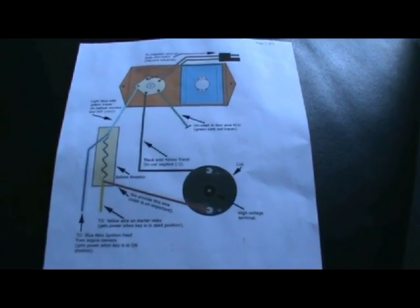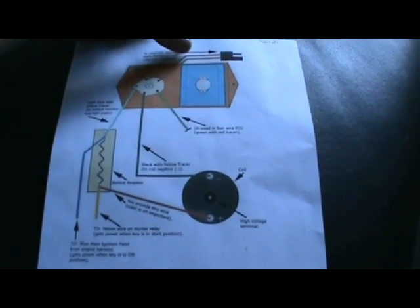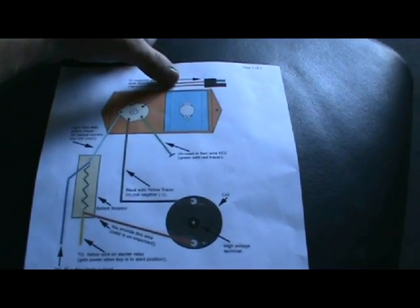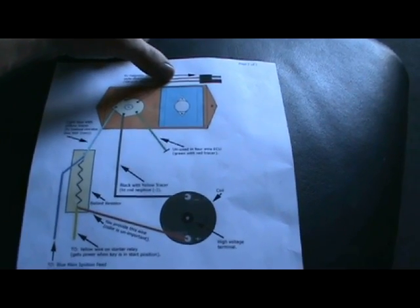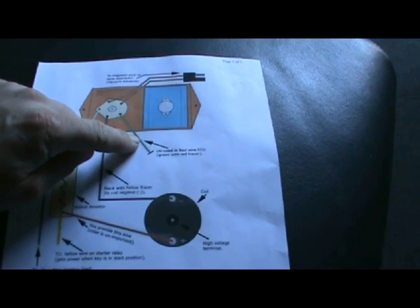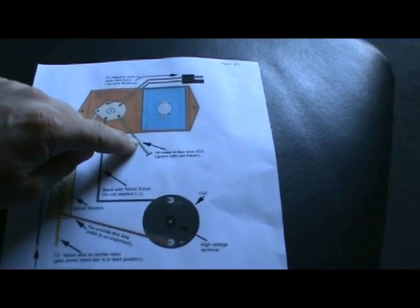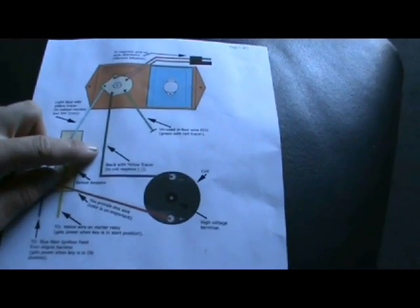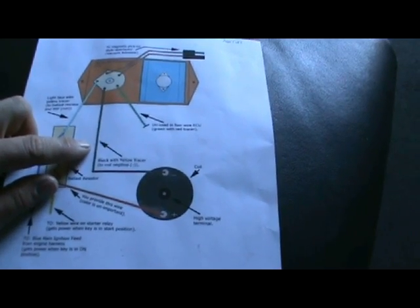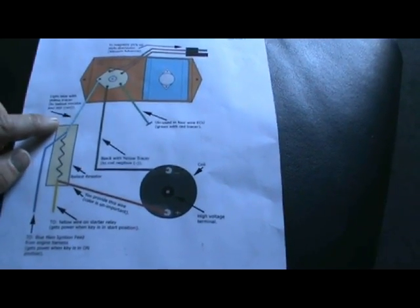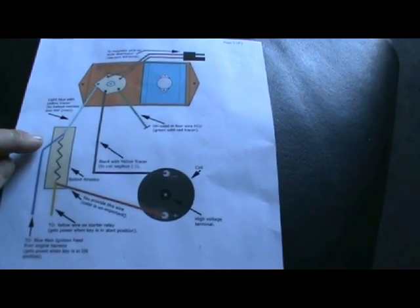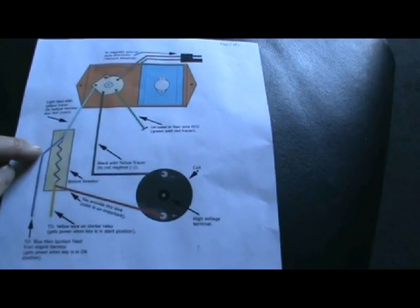So basically in the harness you have the pigtail for the connection to the electronic distributor. You have a green with red tracer wire that will not be used. You have the black with yellow tracer wire that goes to the negative coil. Then you have the light blue with yellow tracer wire that goes to the ballast resistor. It goes to the side that has the key on power.